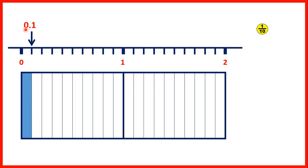The number before the decimal point tells us how many wholes we have, and we don't have any whole rectangles. The digits after the decimal point tell us how many tenths we have, and we have 1 tenth.